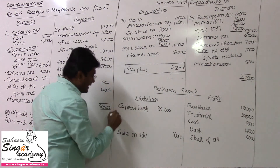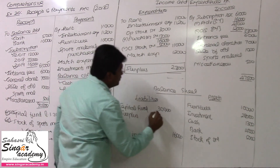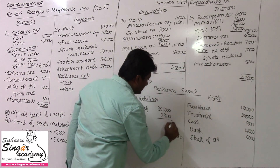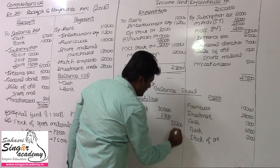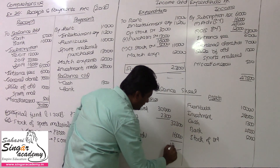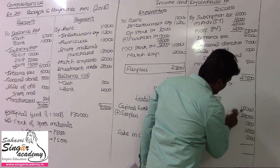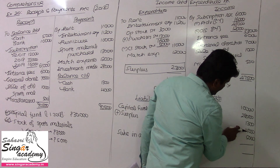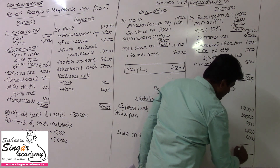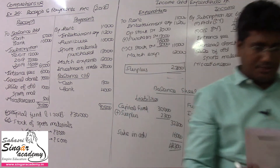That surplus will be added to the capital fund. Surplus: 2,300. Capital fund: 30,000 plus 2,300 = 32,300. The ultimate balance sheet total value is 48,300. We get the answer here. Comprehensive illustration complete.